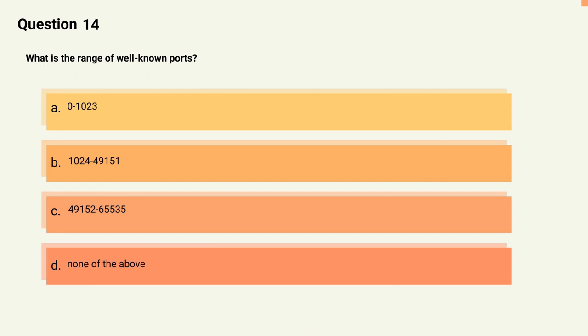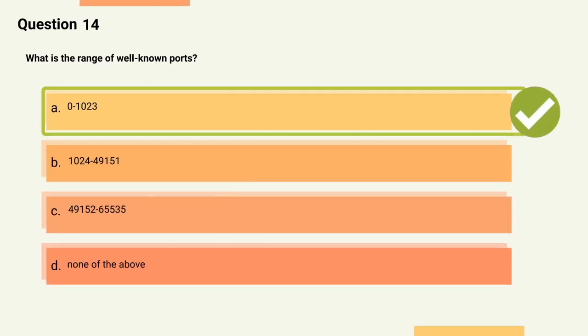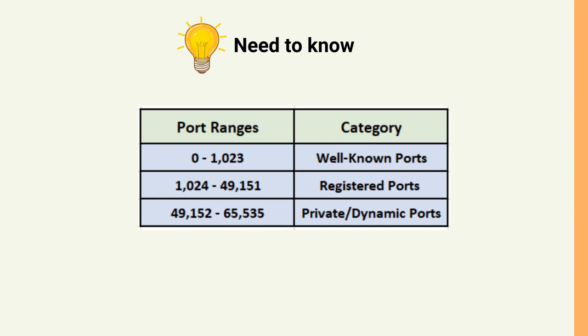Question 14: What is the range of well-known ports? Options: A) 0–1023, B) 1024–49151, C) 49152–65535, D) None of the above. The correct answer is Option A, 0–1023. Explanation: Well-known ports are related to the common protocols at the core of the TCP/IP model and fall in the range of 0–1023.